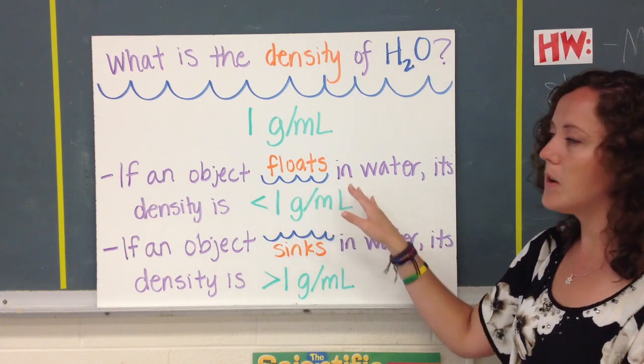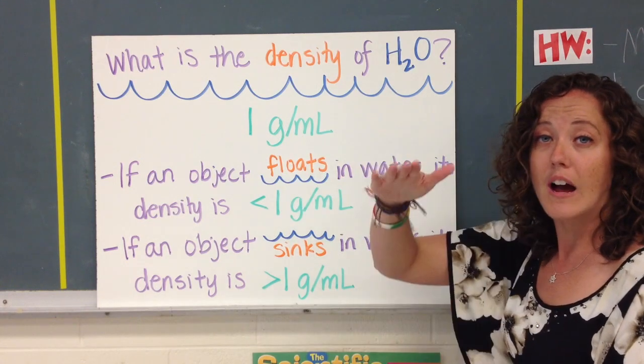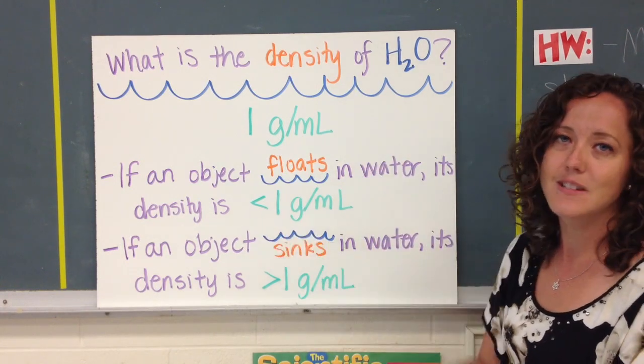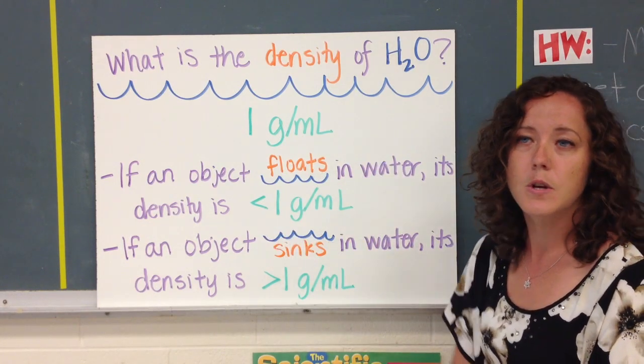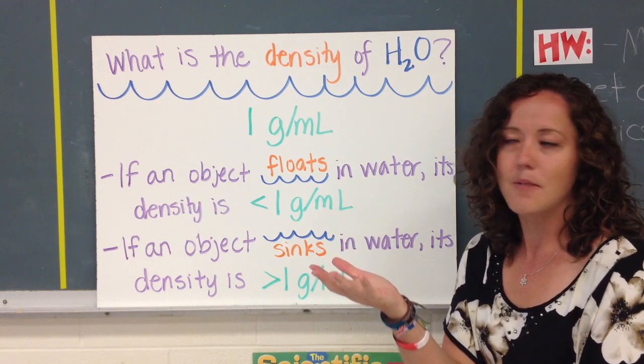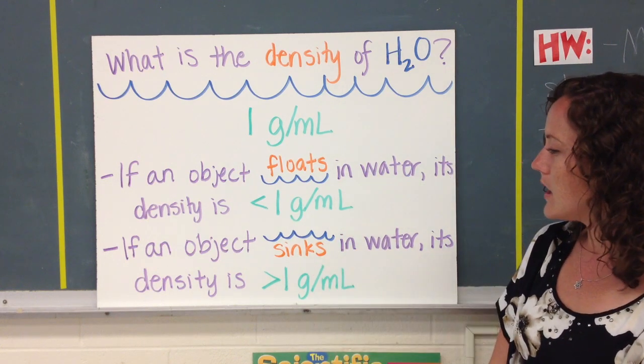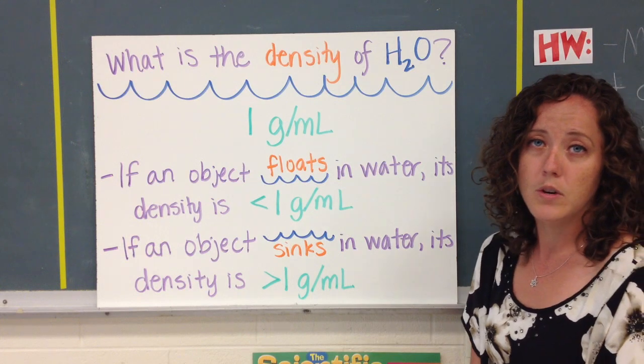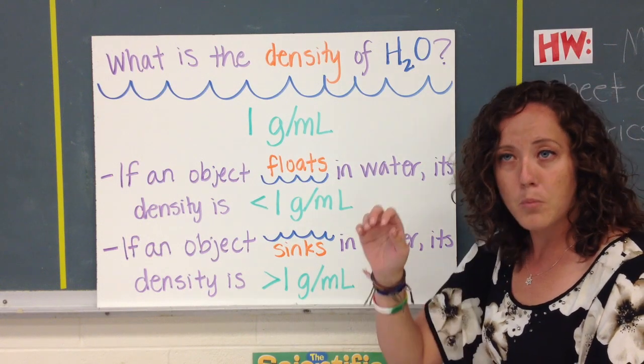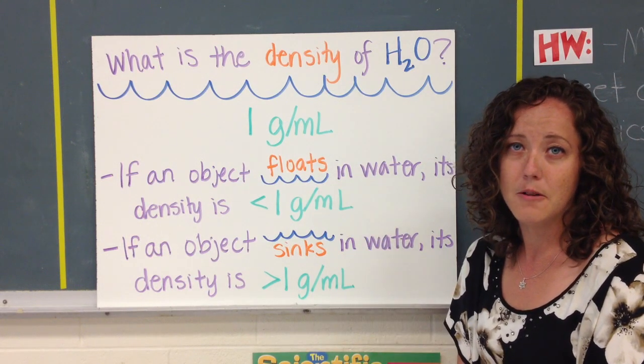If an object floats in the water, so if it comes up to the top, if it rises, we know the density is less than 1 gram per milliliter. So less dense things rise to the top. If an object sinks in water, its density is greater than 1 gram per milliliter. So more dense things will sink to the bottom.